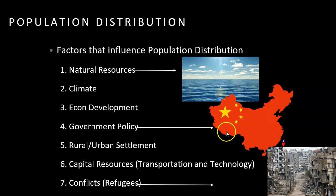Government policy: we will definitely look at what China has done to try to slow down their population growth. It was called the one-child policy in China. It's now been relaxed to a two-child policy, but it has definitely had some effects on the Chinese population, and we will look at that further when we get to our population unit.